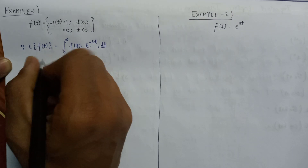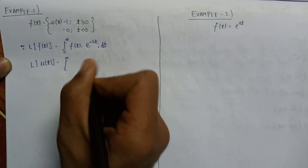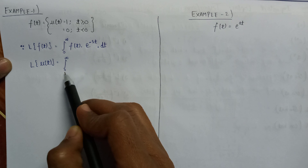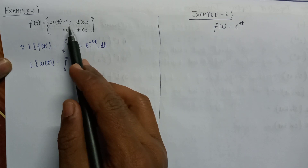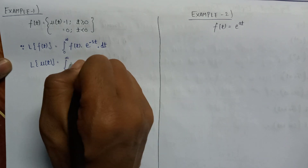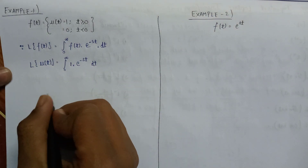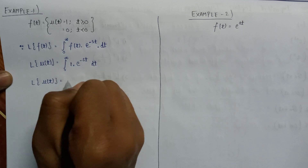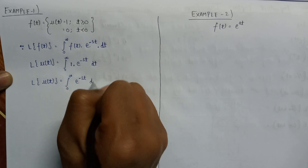Now let us replace f(t) with the unit step signal. The Laplace transform of u(t) equals the integral from 0 to infinite, and since u(t) equals 1 for t greater than or equal to 0, we put 1 in place of f(t). So it becomes the integral from 0 to infinite of 1 times e to the power minus st, dt, which equals the integral from 0 to infinite of e to the power minus st, dt.